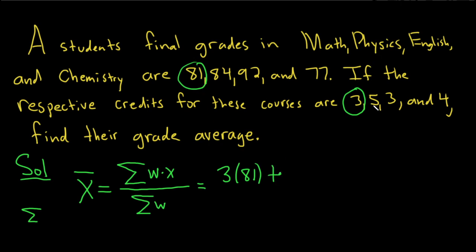Physics is five credits, so that's the importance we assign to the grade. So it's 5 times 84.